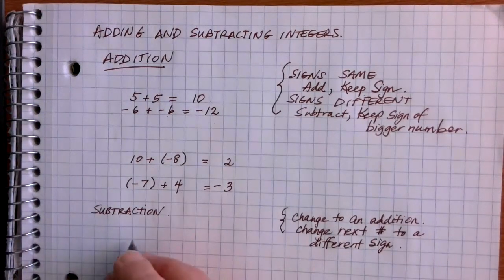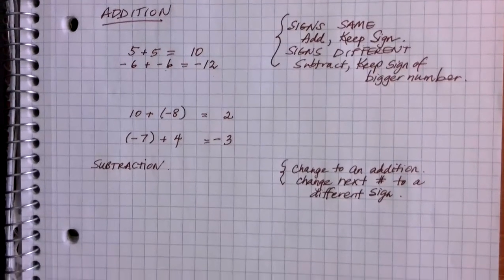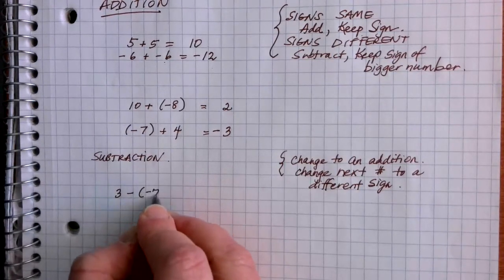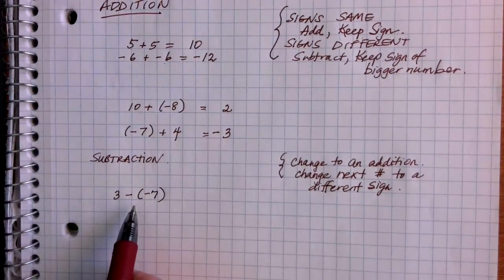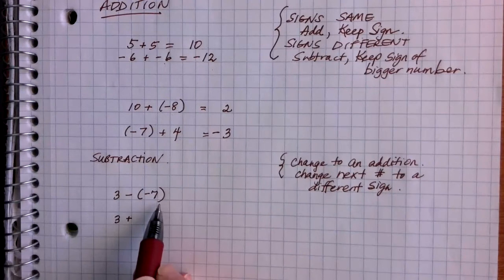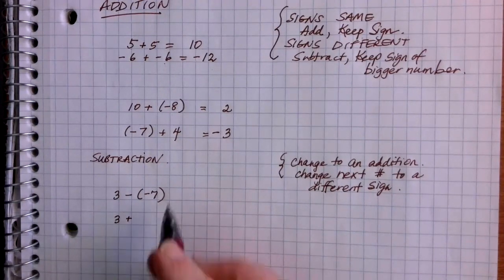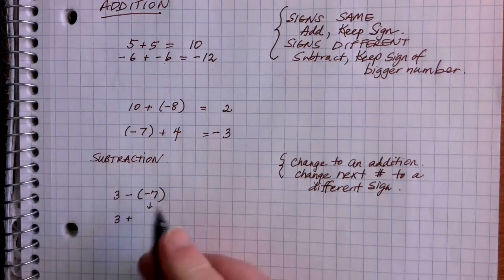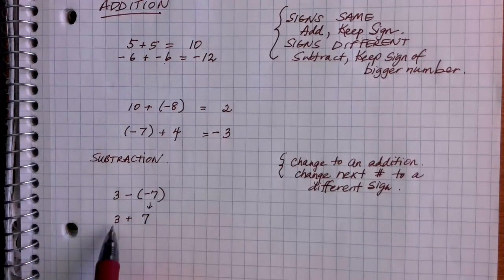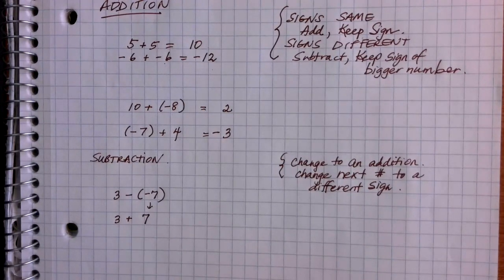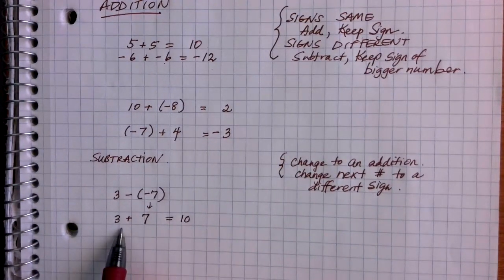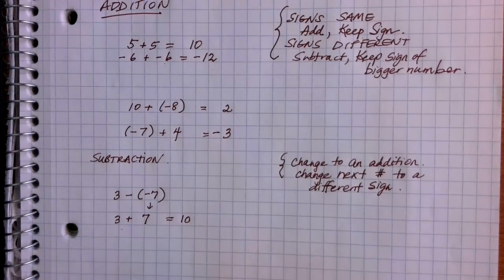Let's look at examples. Suppose we have 3 minus negative 7. Never subtract again — change the subtraction to an addition. Then, to keep the expression balanced, change the sign of the number that comes after: negative 7 becomes positive 7. Now we have an addition problem and can follow the addition rules. 3 plus 7 gives us 10. Three on the positive team, 7 more — we end up with 10 altogether.